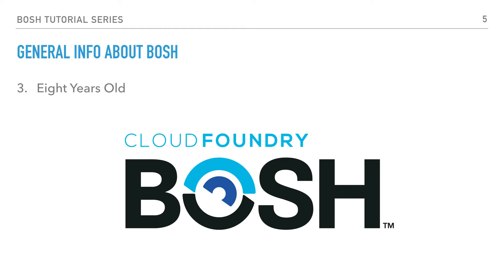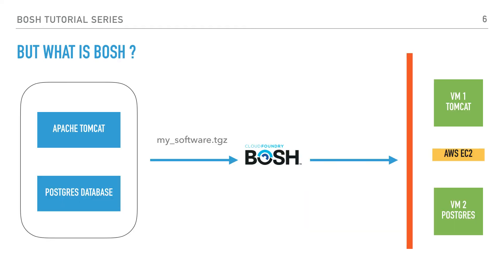We should also note that BOSH is almost eight years old by now, originally seeing light at VMware. So what is BOSH? Let's say we have the objective of running an application server — for example Apache Tomcat — alongside a Postgres database. We want to run each of these two components on separate VMs on Amazon EC2. That's where BOSH comes into place. First, we package our software — in this case Tomcat and Postgres — in a tarball following a specific format.